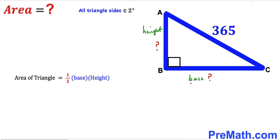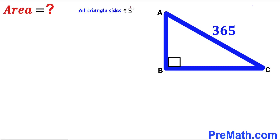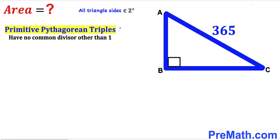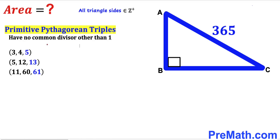Our task is to calculate the value of both legs before we can calculate the area of this triangle. Bear in mind that all these sides are supposed to be positive integers, in other words positive whole numbers. Now let's talk about the primitive Pythagorean triplets. These have no common divisor other than one.